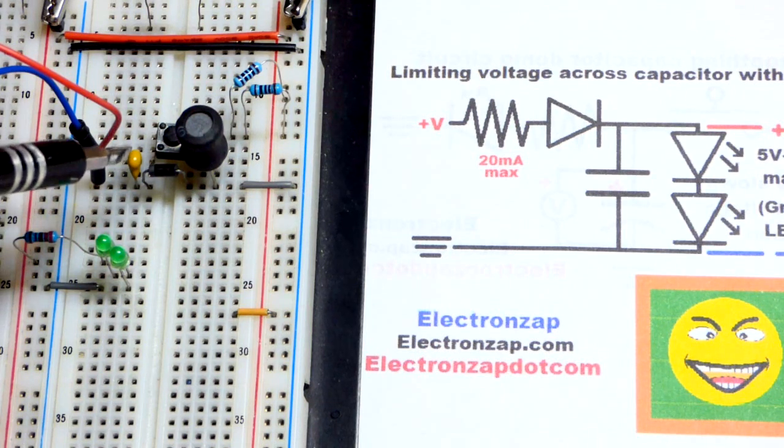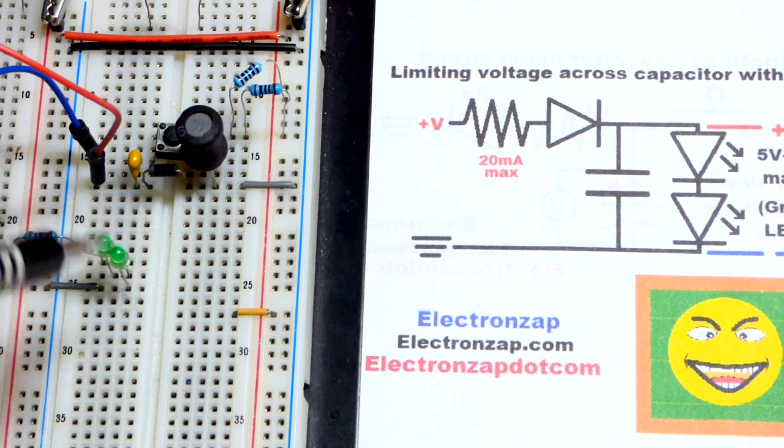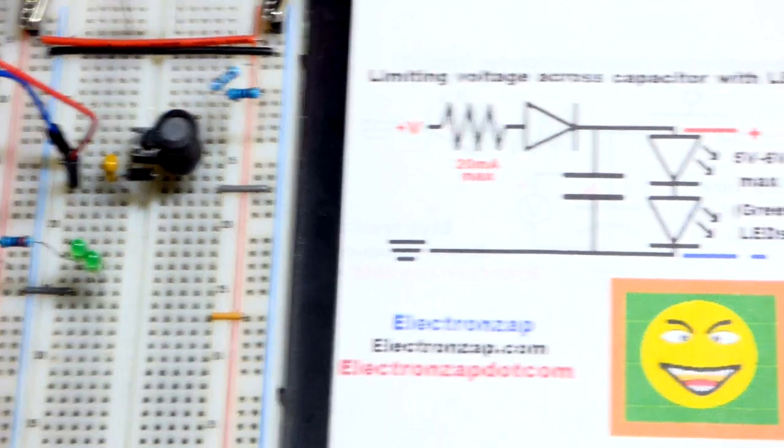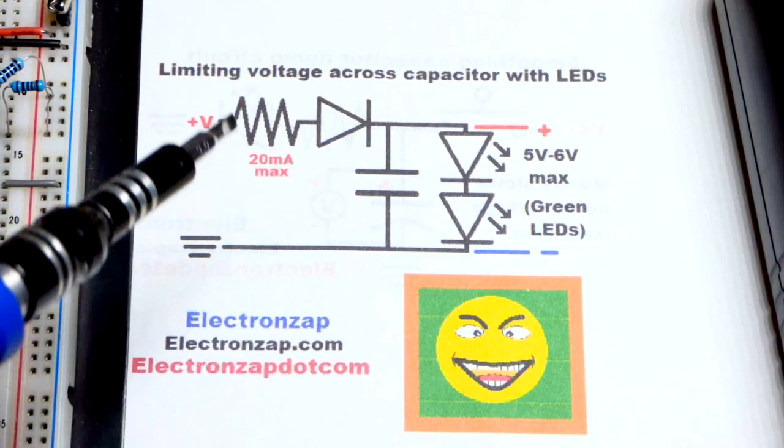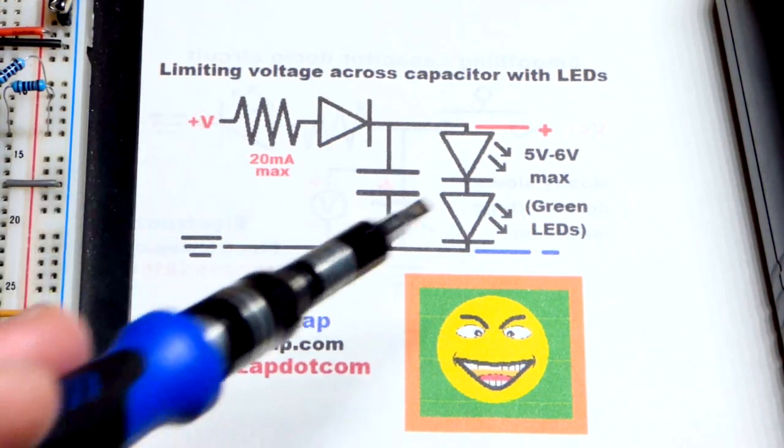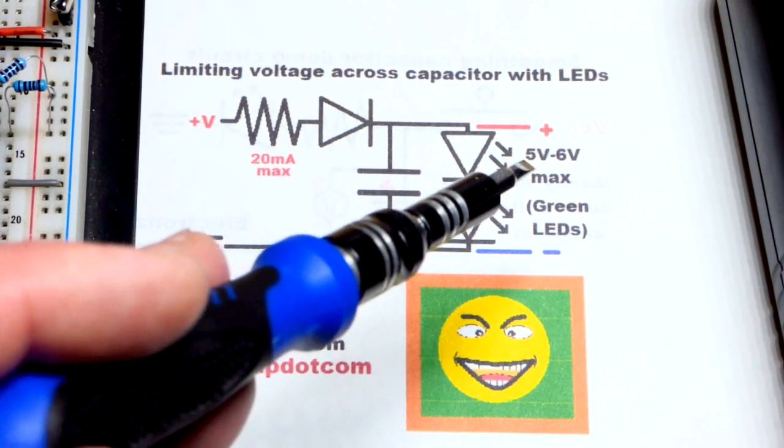We're going to take these two green LEDs right there for this demonstration video. We're going to use three volts at the supply, maybe two volts, and we'll see that we can limit the voltage of the capacitor to five volts really easily.